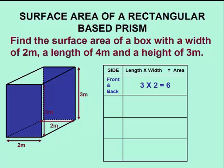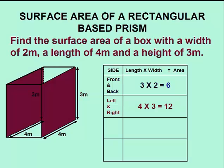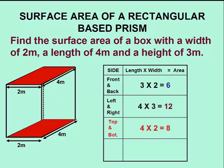We'll begin with the front and back of the box, having a length of 3 meters and a width of 2 meters, giving us an area of 6 meters squared. The left and right rectangles have a length of 4 meters, a width of 3 meters, giving us an area of 12 meters squared. The top and bottom rectangles have a length of 4 meters and a width of 2 meters, giving us an area of 8 square meters.